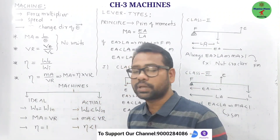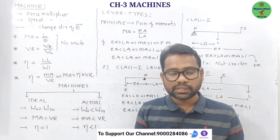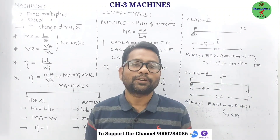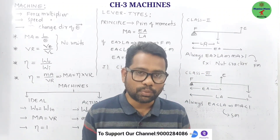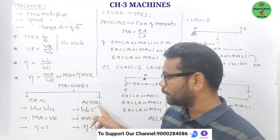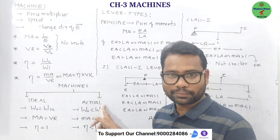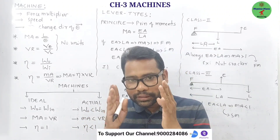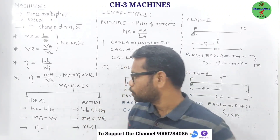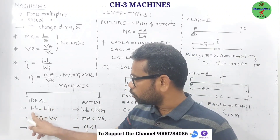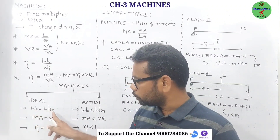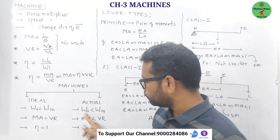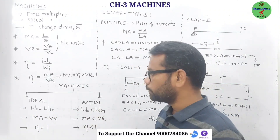Machines are of two types: ideal machines and actual machines. Ideal machines are not practically possible. Actual or practical machines are the machines we use in daily life. In an exam they may ask you to write the differences. For an ideal machine, work output is always equal to work input, whereas for an actual or practical machine, work output is less than work input.